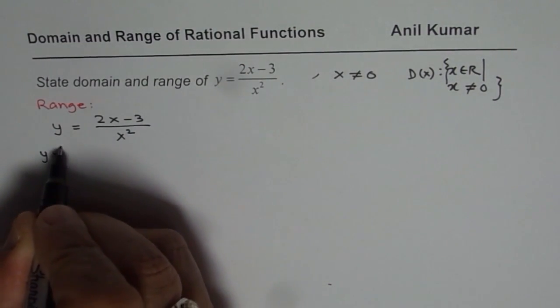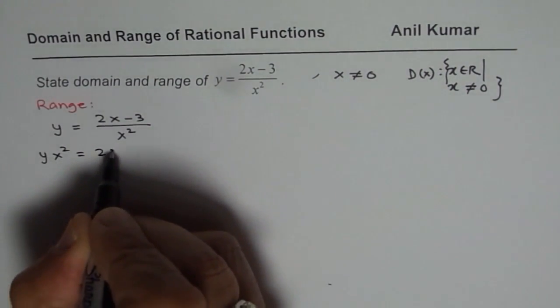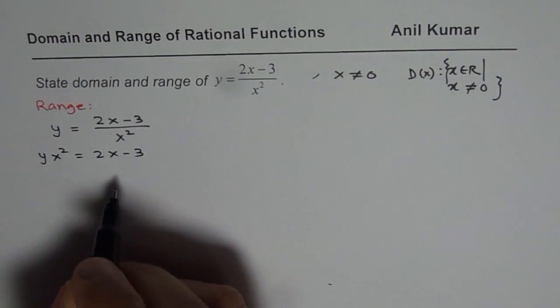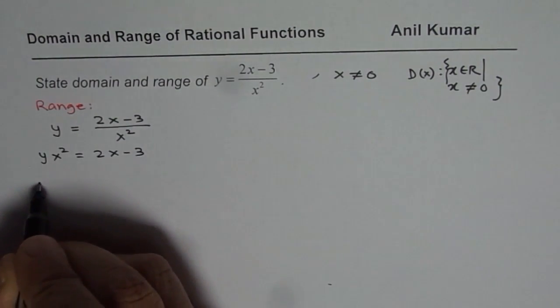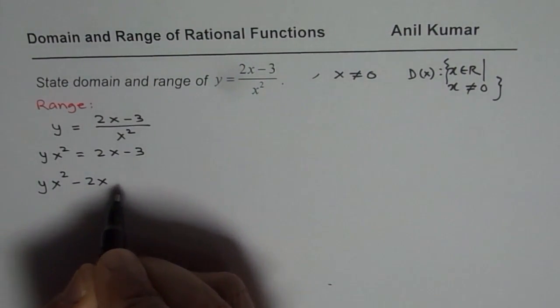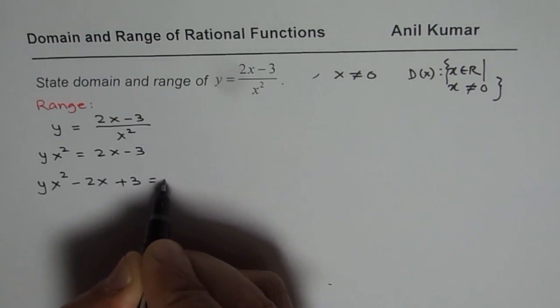So we get y times x squared equals 2x minus 3. Now that becomes a quadratic equation. Bring all the terms together. So we have yx² minus 2x plus 3 equals 0.